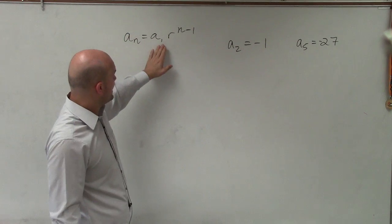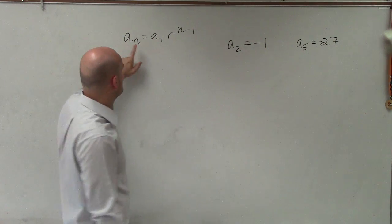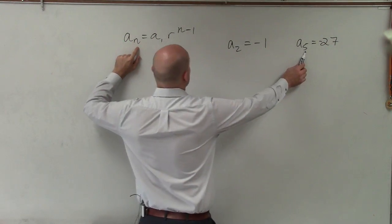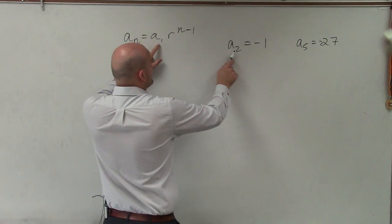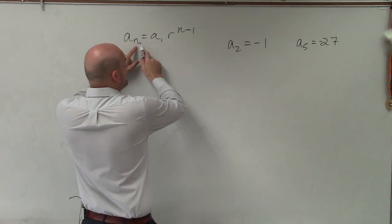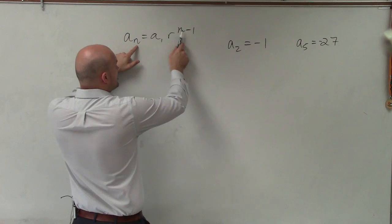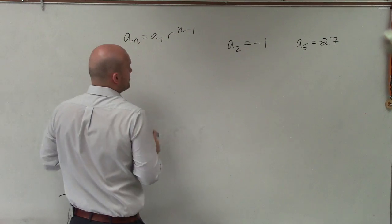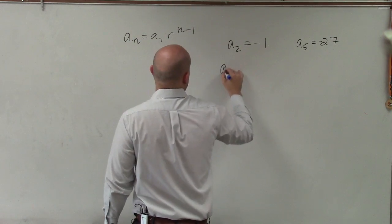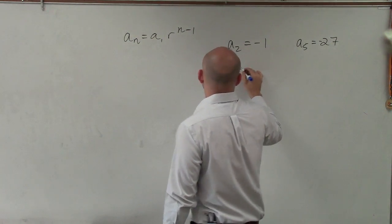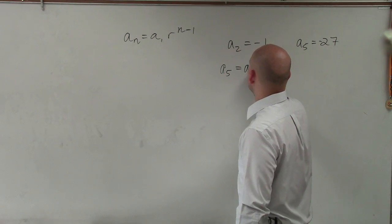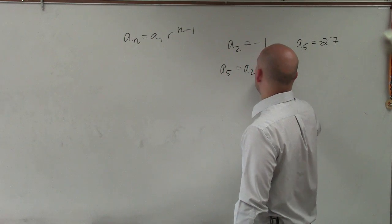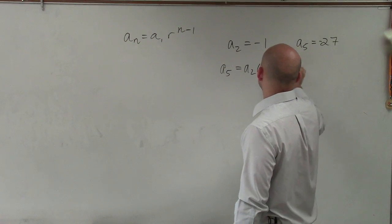Our general formula has a sub n and a sub 1. What I'm going to do is replace a sub n with 5 and a sub 1 with 2. And wherever my 5 goes in for n, I'm going to replace the n with a 5. Wherever my 2 goes in for a 1, I'm going to replace that with a 2. So therefore, I'm going to write a sub 5 equals a sub 2 times r raised to the 5 minus 2.